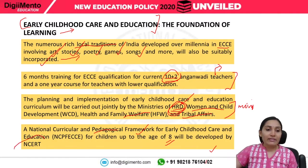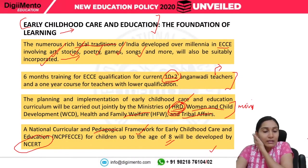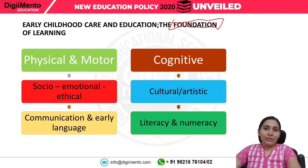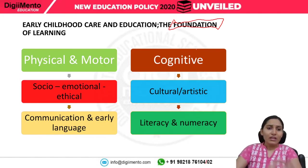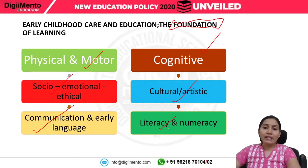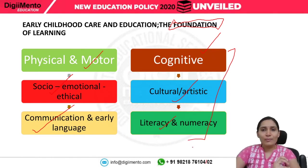A national curriculum and pedagogical framework for Early Childhood Care and Education for children up to age 8 will be developed by the NCERT. Through ECCE, the government's plan is to provide a foundation before children enter mainstream education from Class 1. The skills to be developed include physical and motor skills, socio-emotional and ethical skills, communication and early language, cognitive skills, cultural and artistic skills, and numeracy and literacy skills.